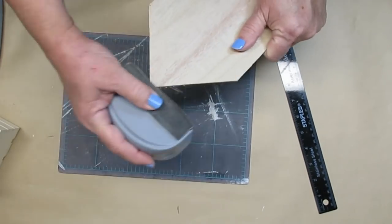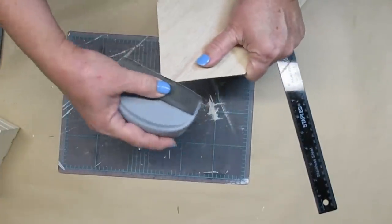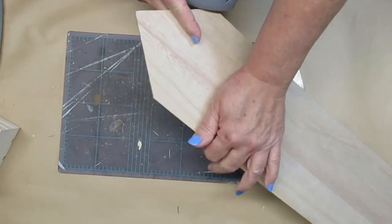Using a sanding block I'm going to round out these edges. I want the corners to be a little bit more distressed looking and not so perfect, and then I'll just give it a little bit of sanding all the way around.